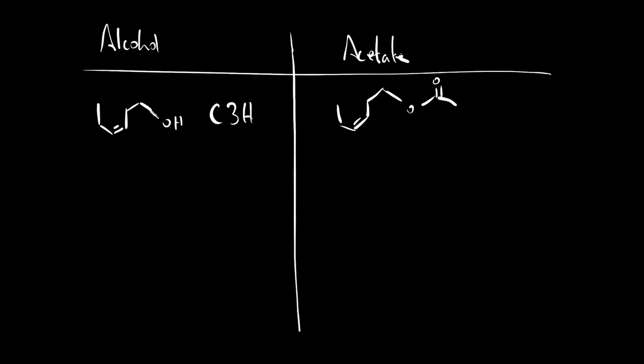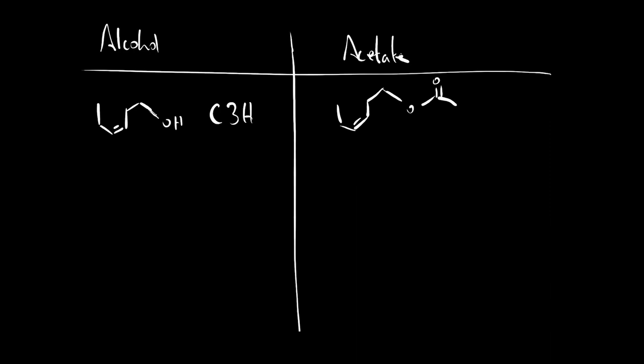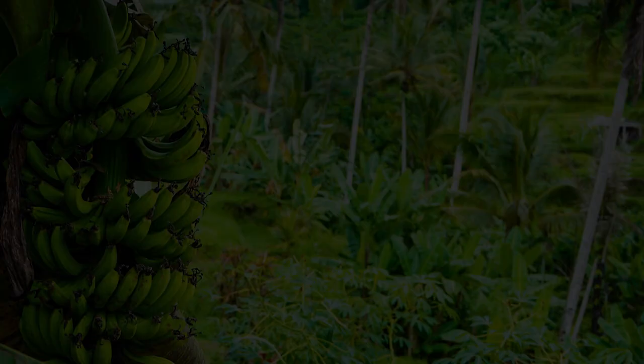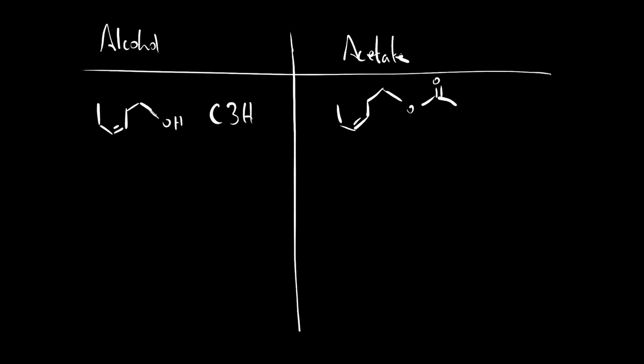Now while cis-3-hexanol smells of fresh cut grass, cis-3-hexanol acetate I find still smells of fresh cut grass but in addition to the fresh cut grass smell it also has this kind of fruity banana kind of smell also to it. So it's a bit like by adding the acetate in this case we've not changed the smell from one thing to another but we've kind of kept the smell the same and then we've also added in this extra component which is the acetate component to the smell.